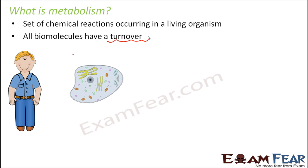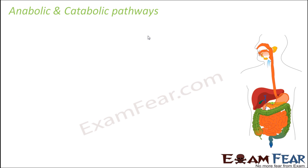All these metabolic reactions take place inside our body — in fact, inside each and every cell present in our body. These multi-step reactions are often known as metabolic pathways. For example, consider cellular respiration — aerobic respiration — where glucose is oxidized to produce carbon dioxide, water, and energy in the form of ATP molecules. This is not a single step process; a lot of steps and many intermediate molecules are involved. This entire process is known as a metabolic pathway.